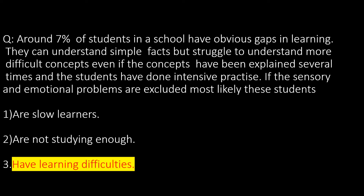Let's look at our next question. Around 7% of students in a school have obvious gaps in learning. They can understand simple facts but struggle to understand more difficult concepts, even if the concepts have been explained several times and the students have done intensive practice. If sensory and emotional problems are excluded, most likely these students are slow learners, are not studying enough, or have learning difficulties. Let's remove the distractors first.